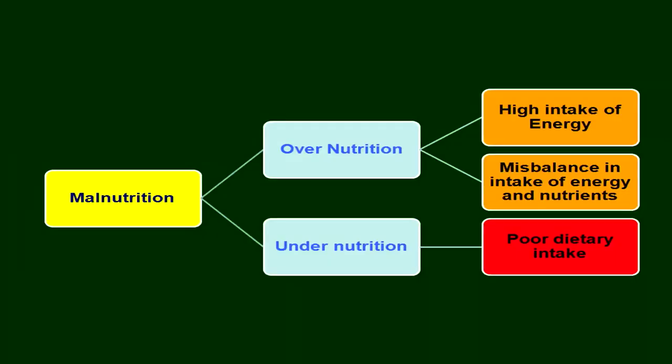Malnutrition can be categorized into two: overnutrition and undernutrition. Overnutrition means you are consuming more food or more energy and there is a disbalance in the intake of energy and nutrients. There are chances energy intake is more but nutrient intake is less — you may be overnourished but inside you are undernourished. Undernutrition is definitely due to poor dietary intake or poor nutrient intake.